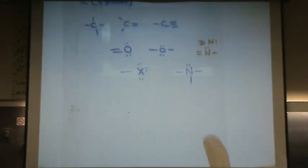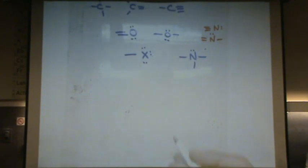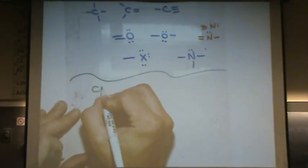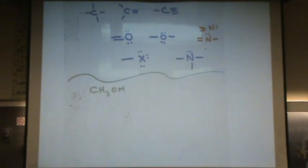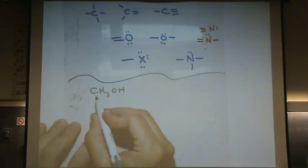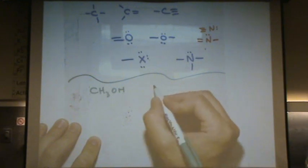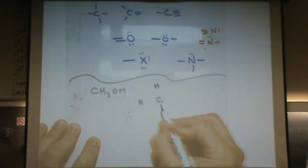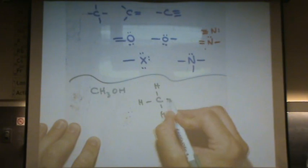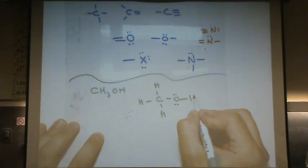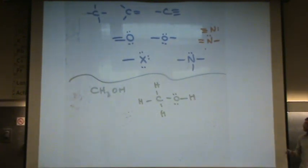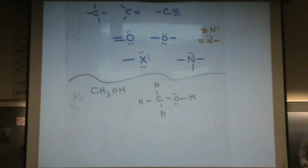Now let's try to draw a structure. If you see CH3OH and I say draw the Lewis structure, you say: okay, there's a carbon, and it's got to have four bonds. Those three hydrogens are three of the four bonds, and oxygen is the next one. Oxygen has to have two bonds and two lone pairs, so the hydrogen is the next one. Done.